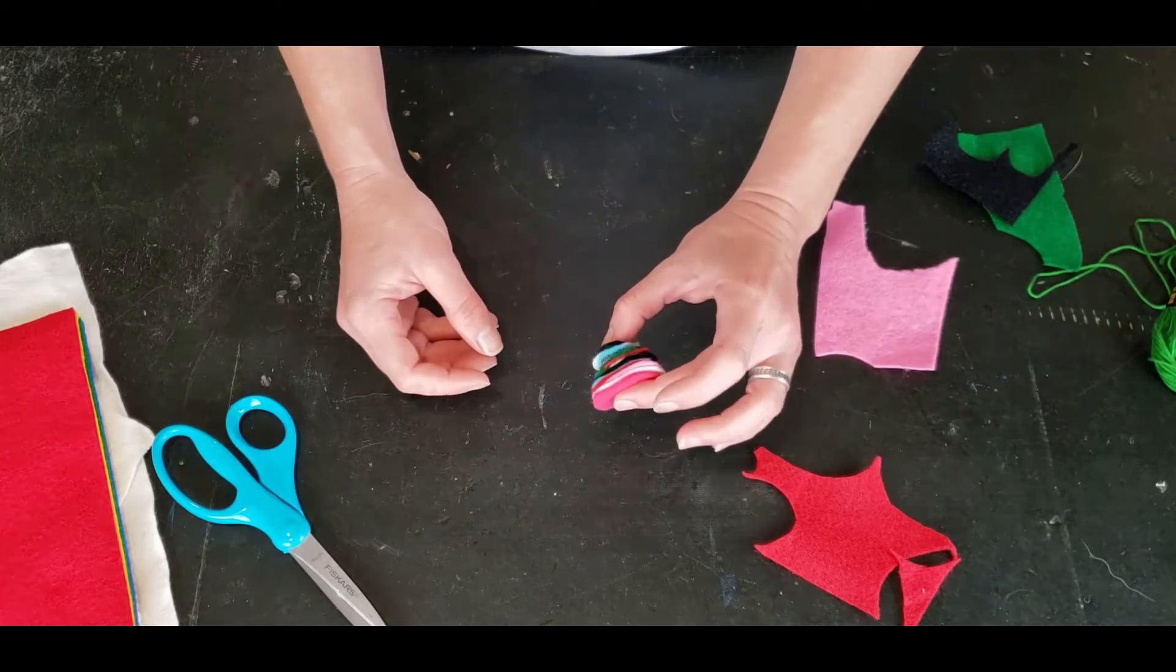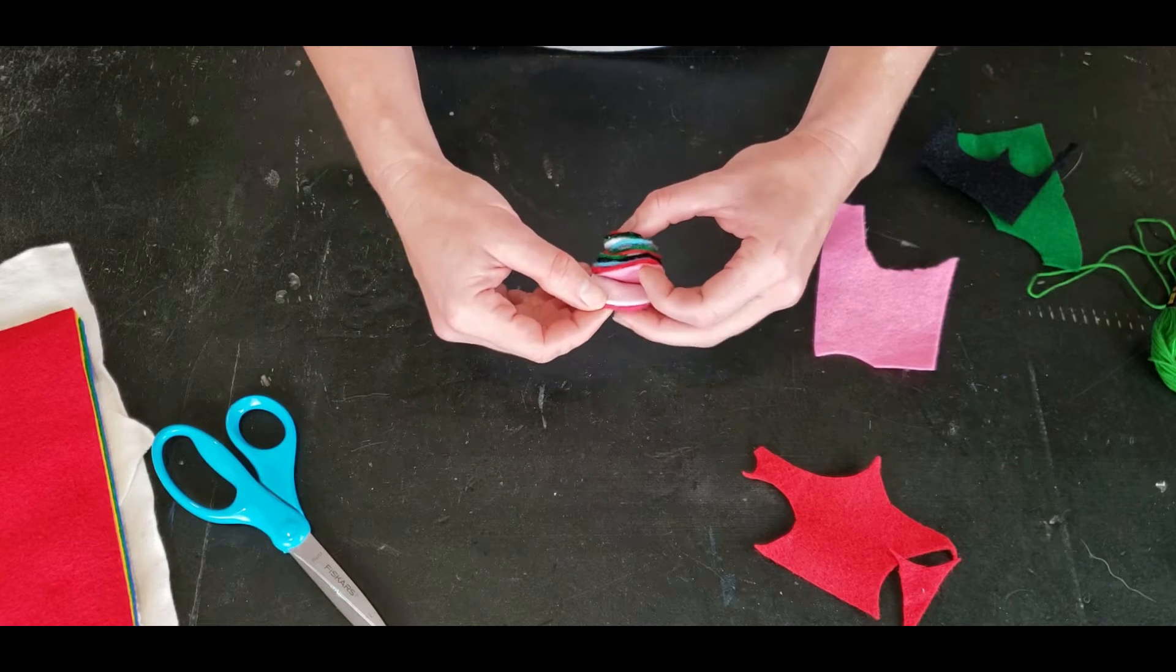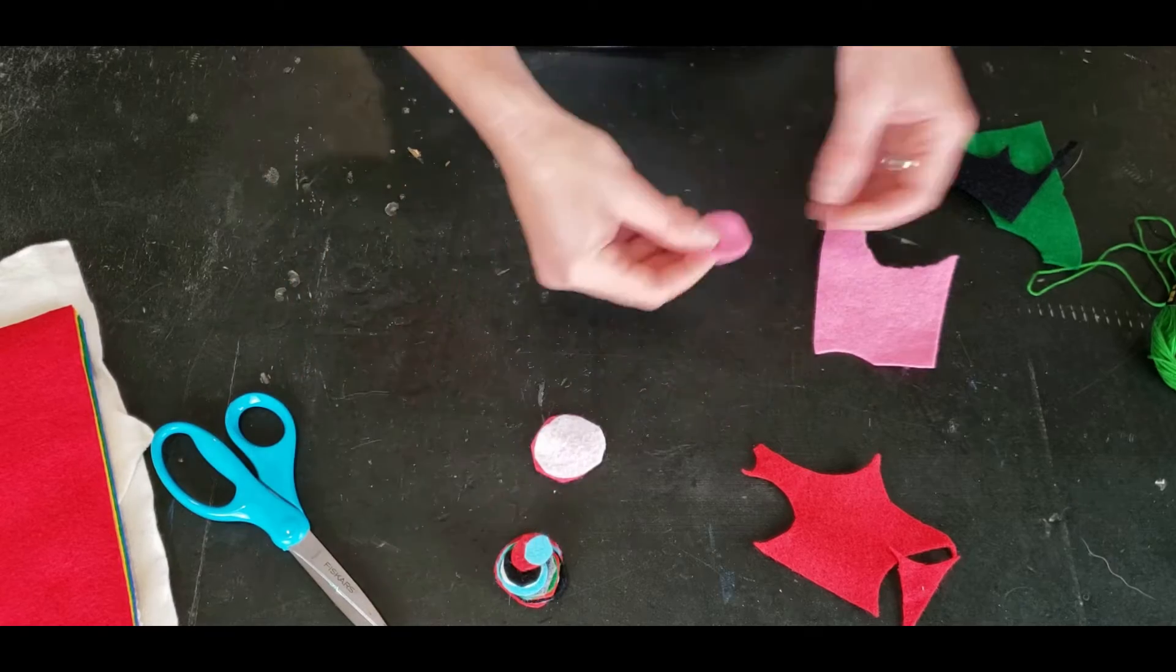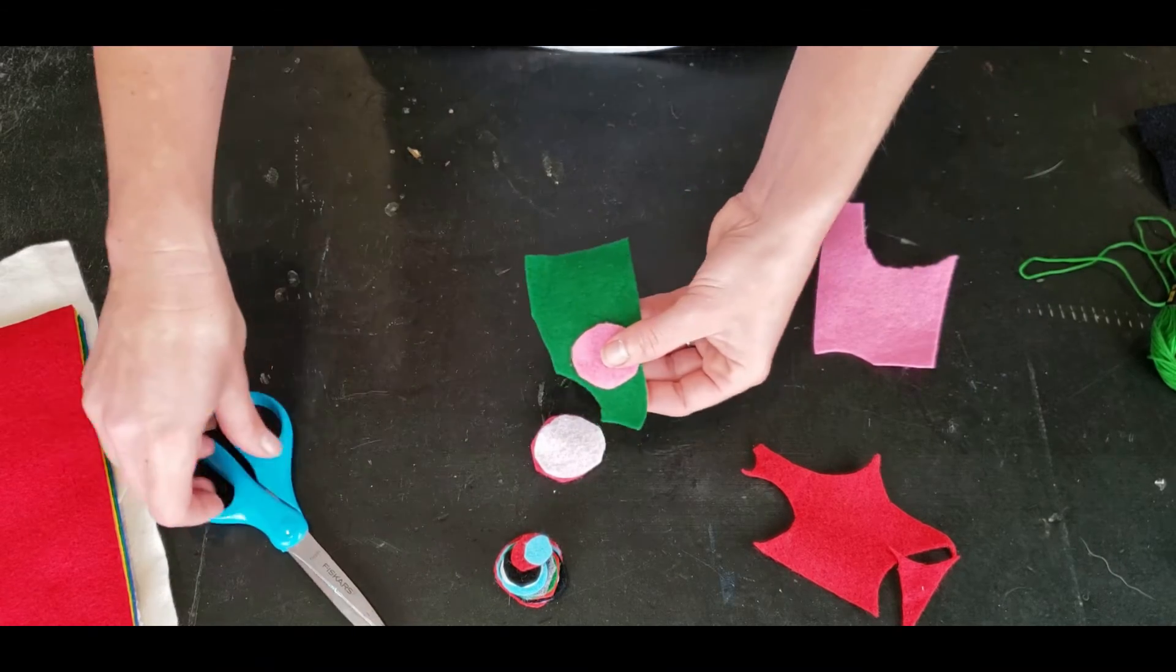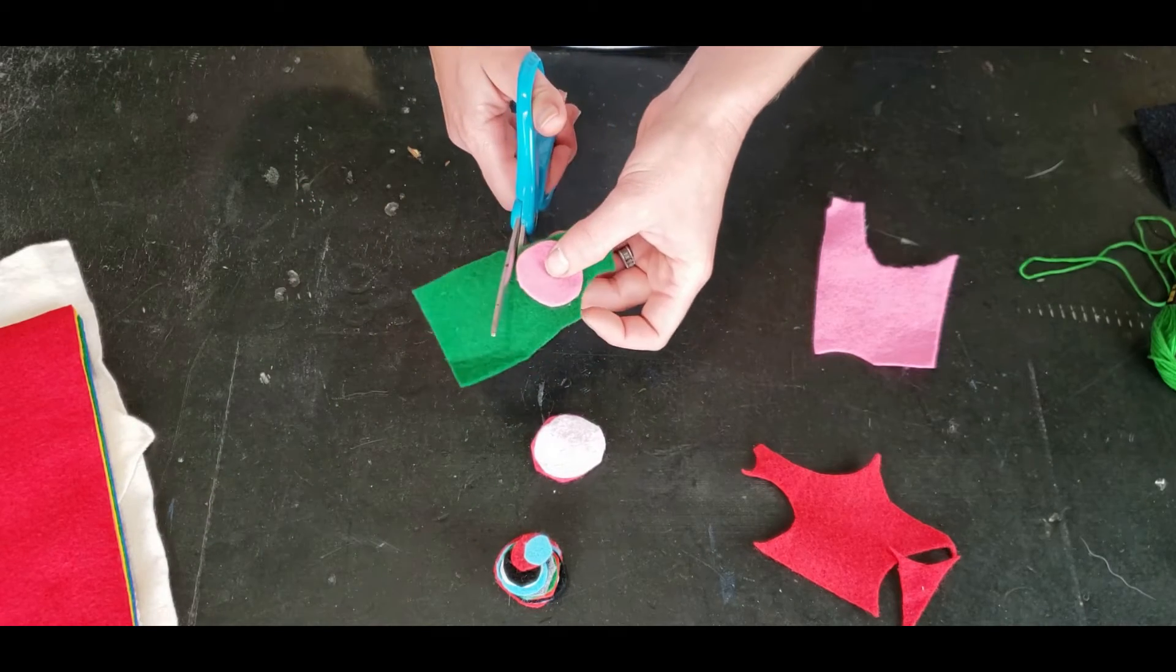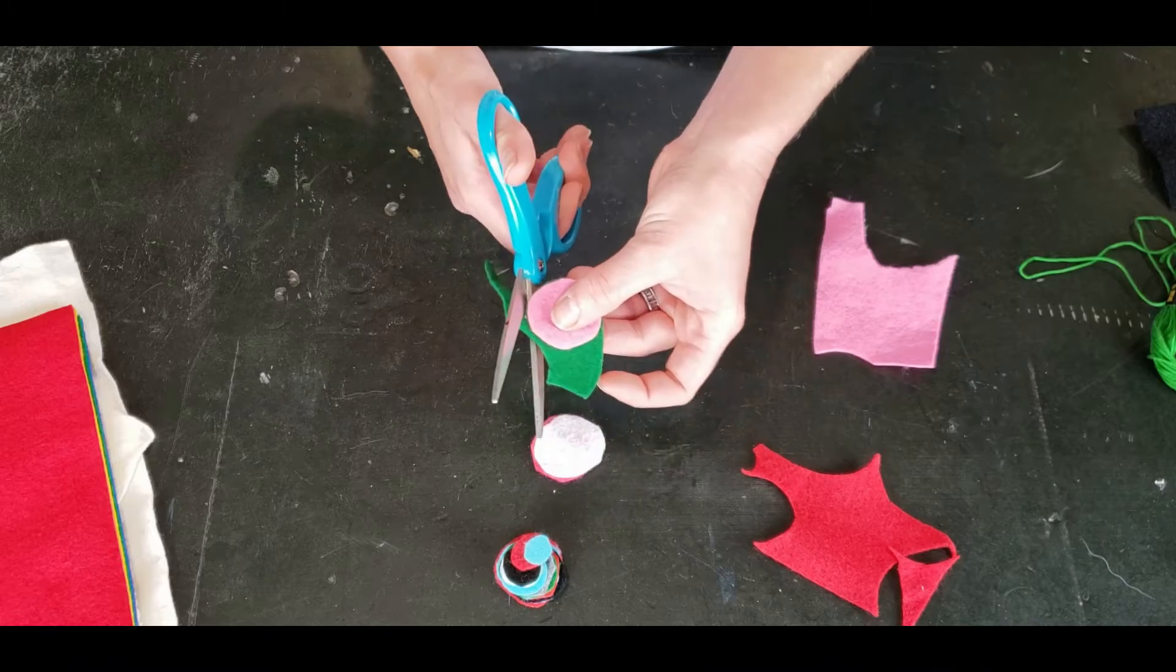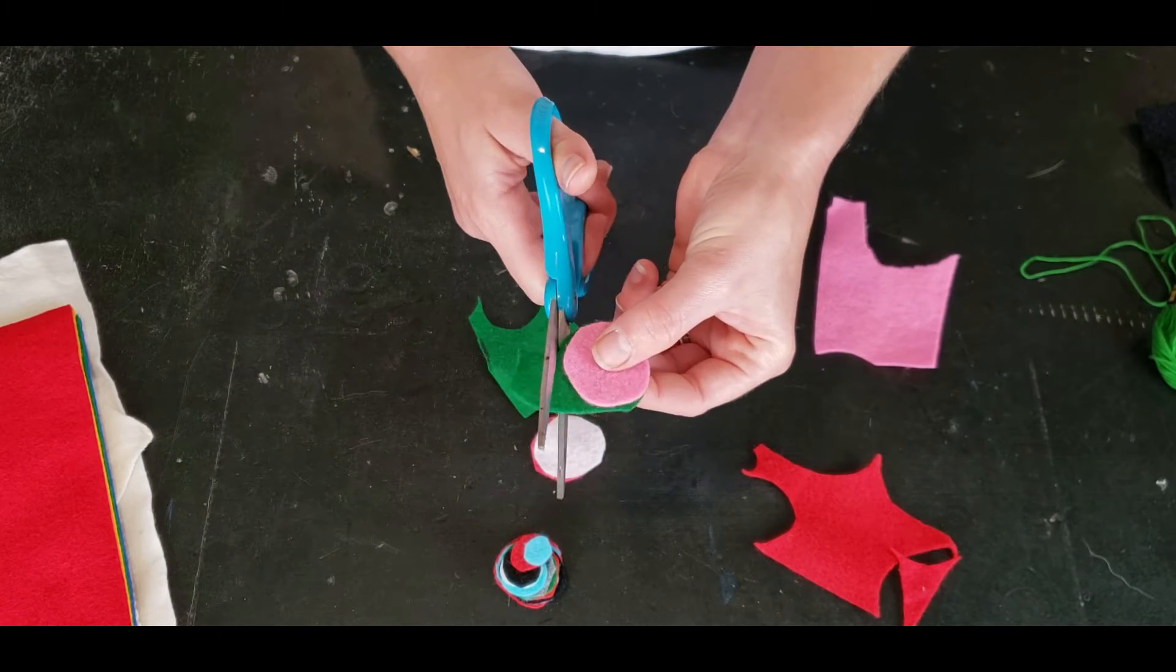If you're going with alternating colors, try to think about spacing your colors out a little bit. Here I've got all those pinks and purples, so maybe I want to break it up and add a green. I'm going to get a piece of green, lay it on top, and go around the outside so that there's ever so slightly a little bit extra around the edge.